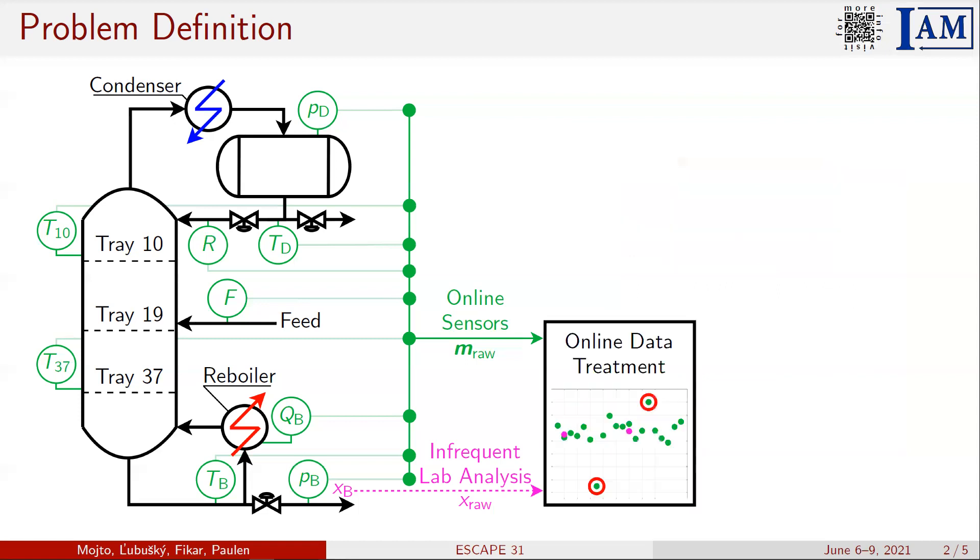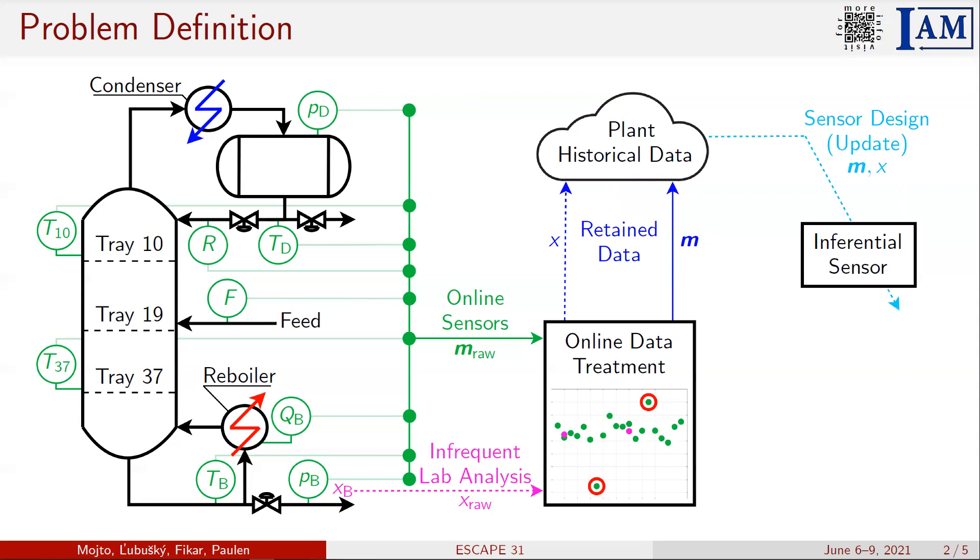The available data undergoes online data treatment procedure where systematic errors and outliers are indicated and removed from the measurements. Retained data can be subsequently stored in the refinery database with the rest of the plant historical data. The historical data can be used for the further analysis of the process behavior or to design inferential sensors.